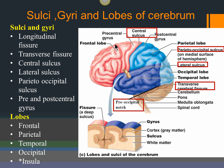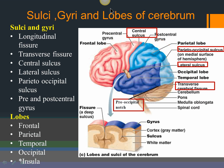Some important sulci help identify the lobes of the cerebrum. The longitudinal fissure separates the two cerebral hemispheres. The transverse fissure separates the cerebral hemisphere above from the cerebellum below — you can actually lift the cerebral hemisphere up and see the cerebellum beneath. So the transverse fissure is between the cerebrum and the cerebellum.